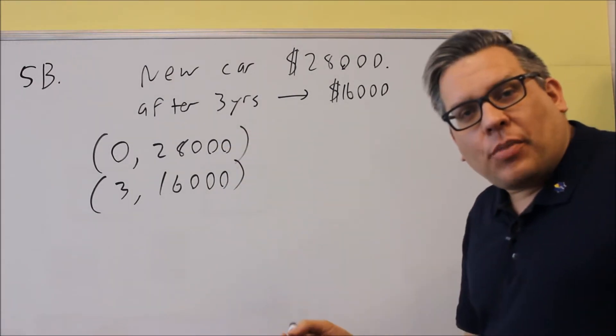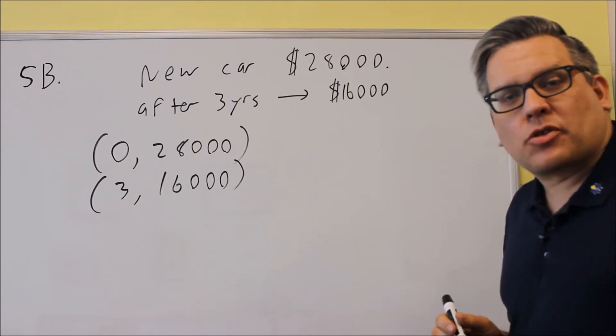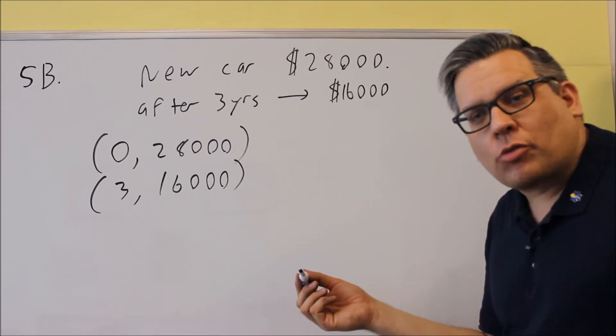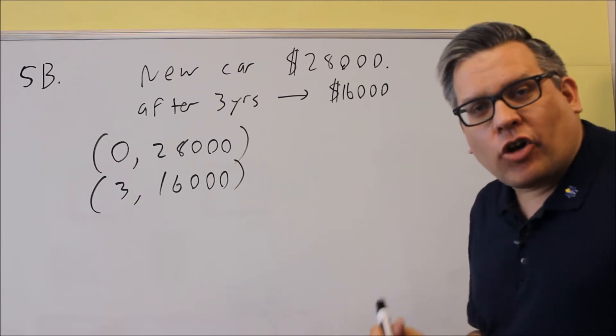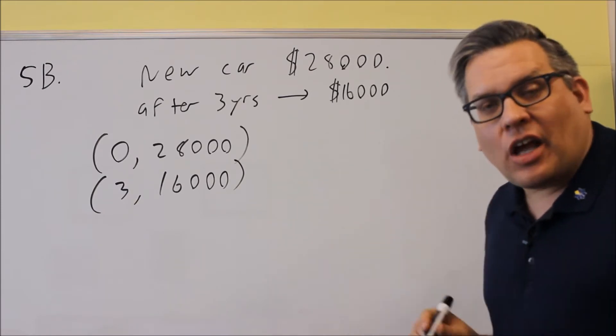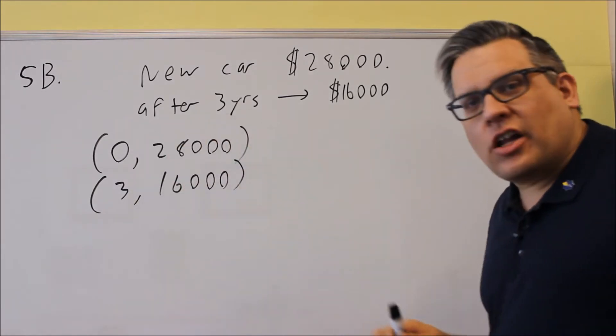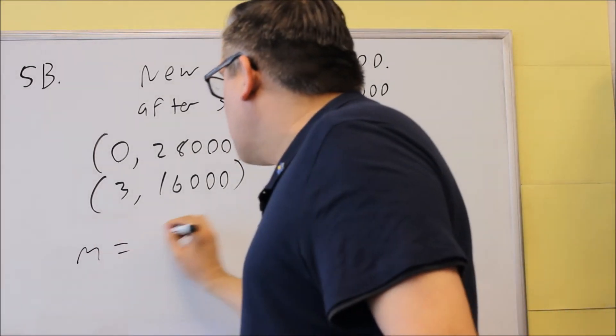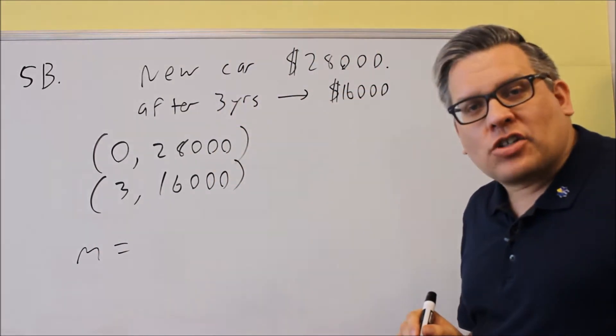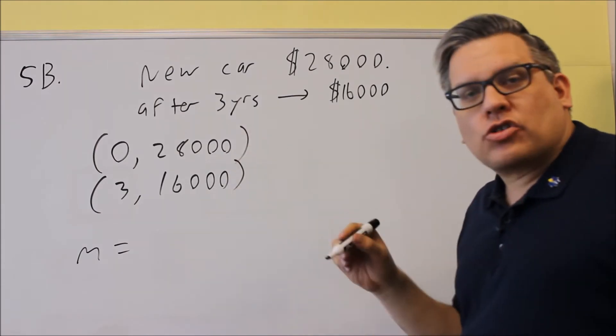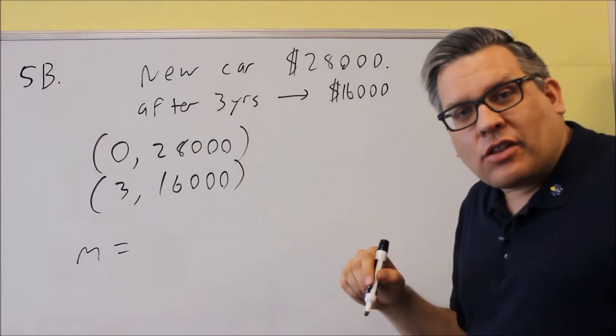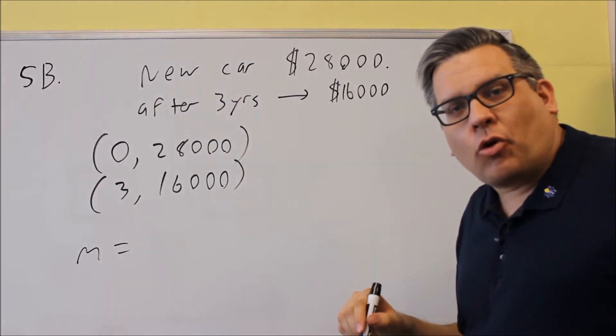We do that by first finding the slope, then use y equals mx plus b to get our answer, making sure we have the correct variables V and T. The slope is the change in Y over the change in X. It doesn't matter which way you subtract, as long as you subtract in the same order.